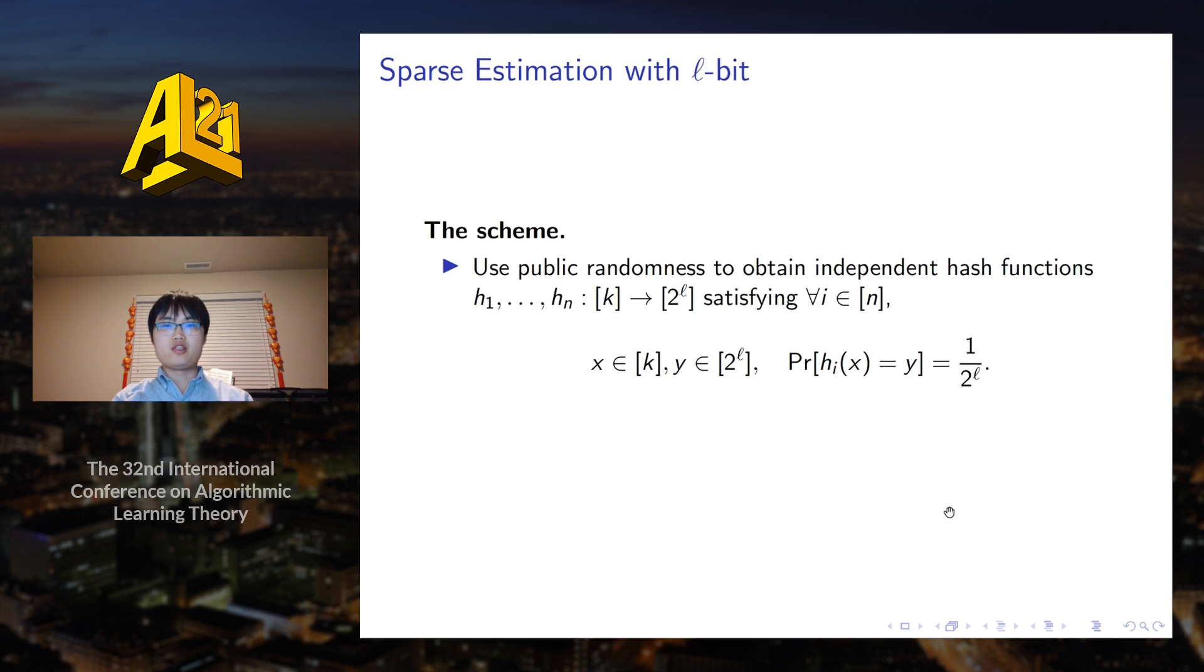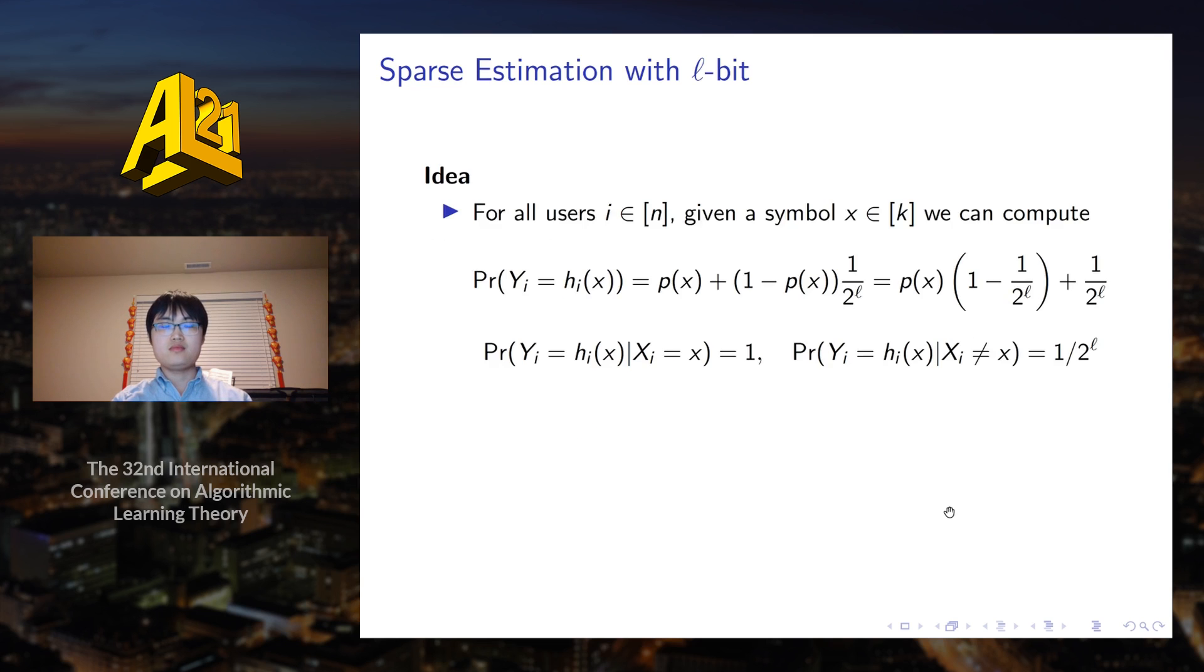Now I will introduce the algorithm for L-bit communication. The communication scheme is a very simple protocol which uses public randomness to obtain hashing functions for each user. They are obtained independently such that given each symbol x, the output y is chosen uniformly at random from the sets of all L-bit binary strings. Once the functions are assigned, each user would simply send the message using the hash function. To estimate the underlying distribution, the idea is that given a symbol x, we can compute the probability that the message yi equals to hi of x.